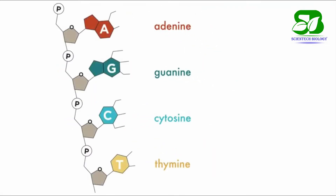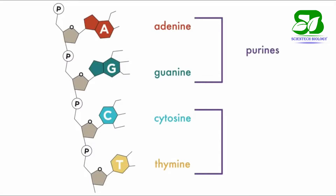Adenine and guanine are purine bases, which have a two-ring structure, whereas cytosine and thymine are purine bases which have only one ring structure.